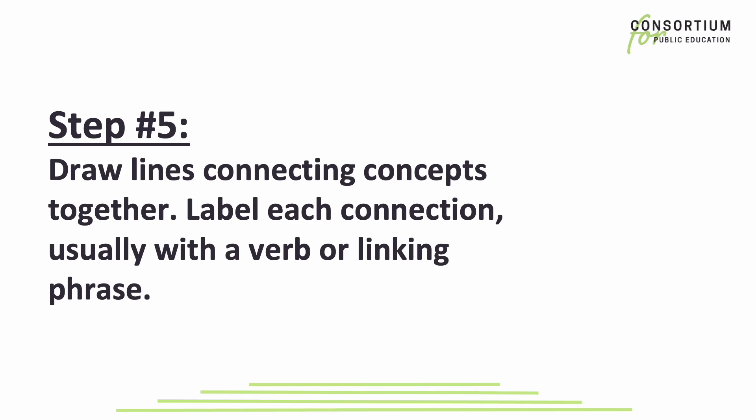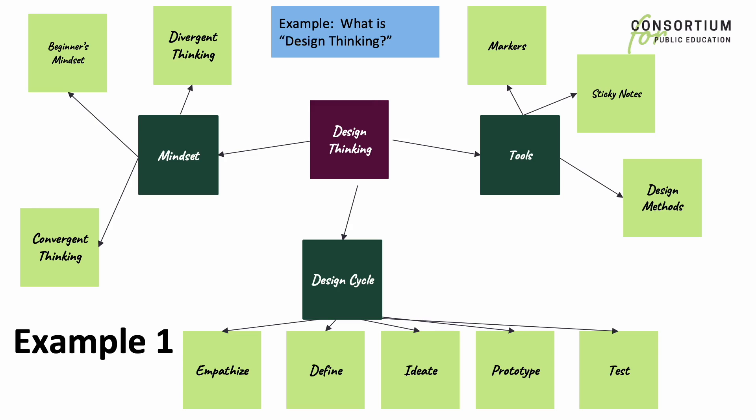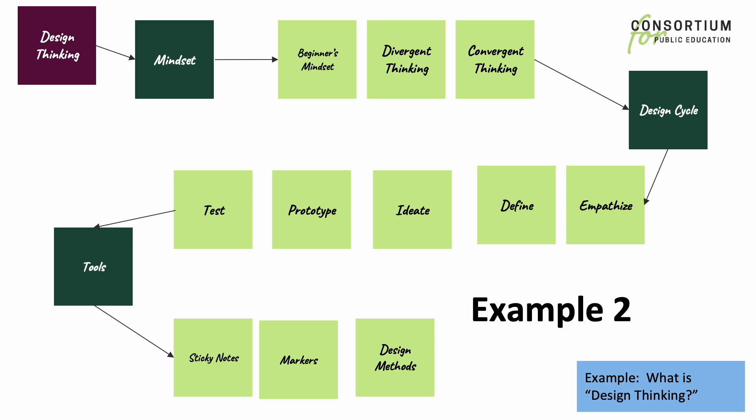In step five, you draw lines to connect concepts together. Label those connections, usually with a verb or a linking phrase. In our example on design thinking, some of the brainstormed ideas become the links. This doesn't happen every time. But you can see, in example one, we have more of a web, whereas in example two, we have more of a linear progression.